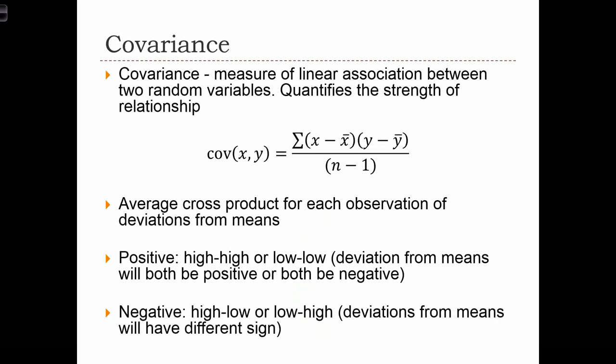In order to build our correlation statistic, we first need to define something called the covariance, which is a measure of linear association between two random variables. Covariance quantifies the strength of a relationship. It essentially tells us whether or not two variables vary together — co-vary.